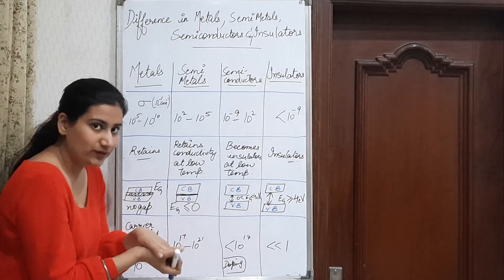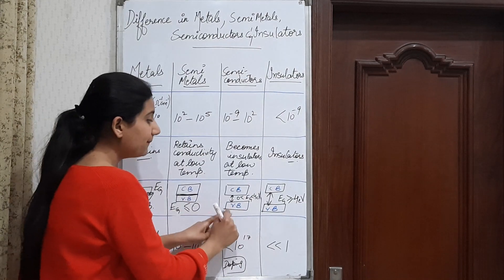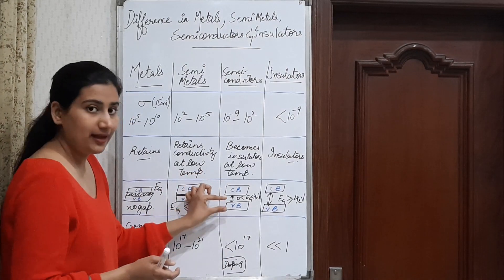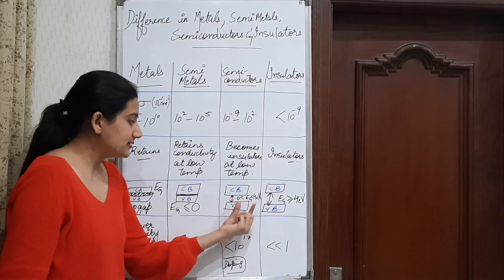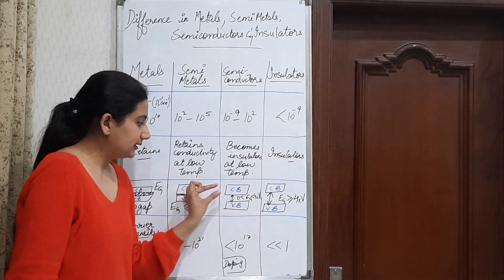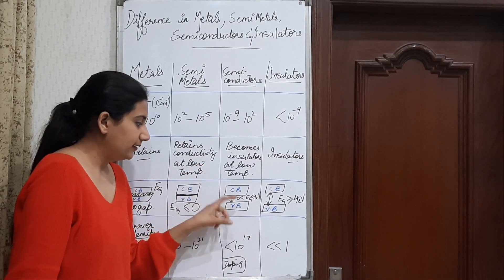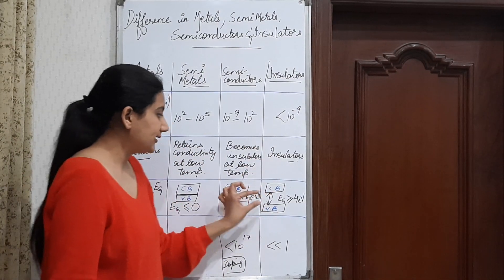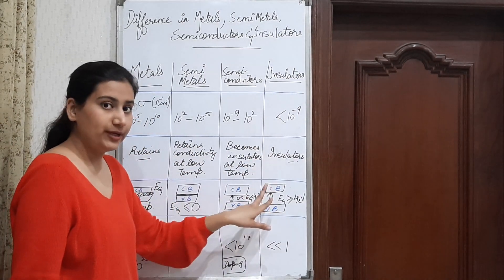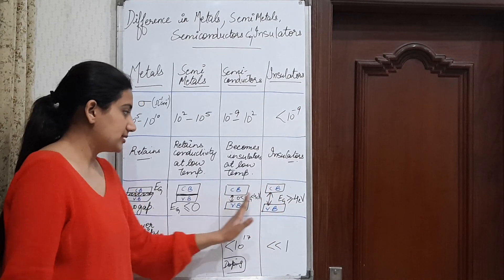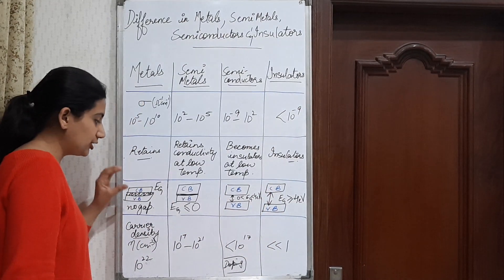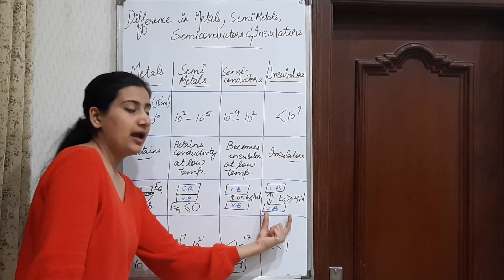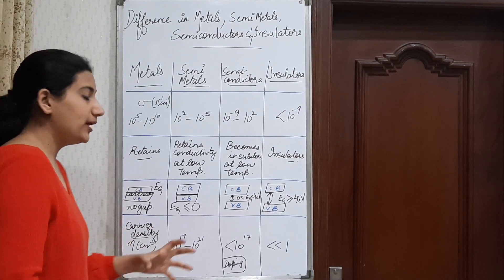Semiconductors have a specific energy gap between the conduction band and valence band, ranging from zero to four electron volts. For insulators, the energy gap is more than four electron volts. So this is the difference between the energy gaps of metals, semi-metals, semiconductors, and insulators.